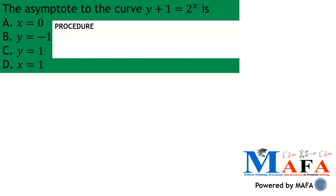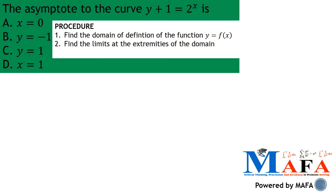I'm going to give you the procedure to use in order to get the asymptote to a curve. The very first step is to find the domain of definition of the function y equals f(x). The second step: from the domain of definition, compute the limits at the boundaries or extremities of the domain. Thirdly, from those limits we deduce the asymptotes.